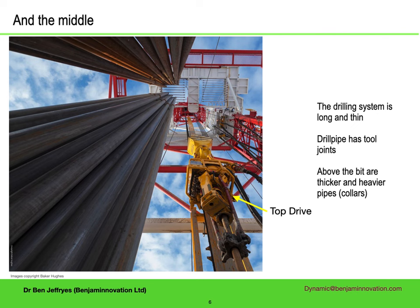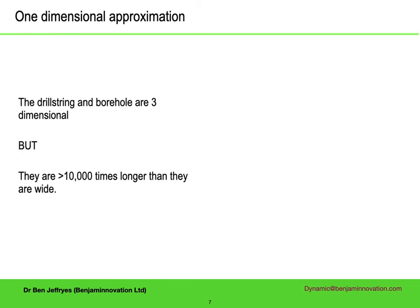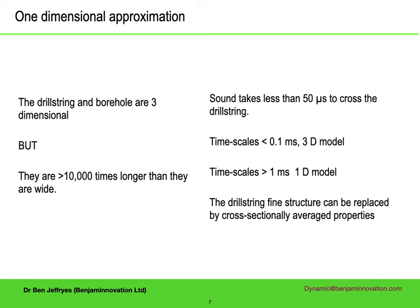Here's another view from the bottom, which also shows how the pipe is turned. The top drive is on the right, which screws into the top pipe section and runs up and down on rails. All the maths that follows uses a one-dimensional approximation for the drill string, because the drill string and the borehole are so much longer than they are wide. A typical borehole is on average about 30 cm wide, a drill string about 15 cm, but they will be thousands of metres long. So long as we restrict ourselves to effects over timescales long compared to the time it takes for sound to cross the drill string or the borehole, we can replace the detailed 3D structure by a 1D average. As a rough guide, for timescales longer than a millisecond, or frequencies less than 1 kHz, a 1D approximation is fine.